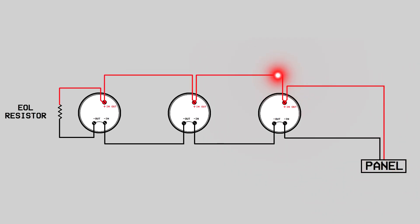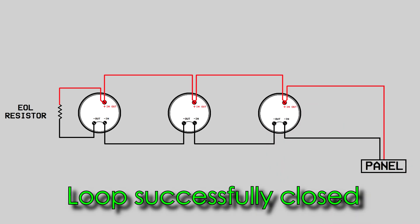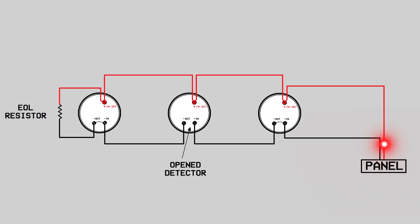Now suppose there is a break in the line after maybe say one or two detectors. How will the panel get to know? To solve this problem there is a concept of end of line resistor that has been deployed here. The end of line or also called as EOL resistor is connected at the last smoke detector. This will mean that some current will always be flowing through the closed line via the EOL resistor. The panel will be sensing this current.